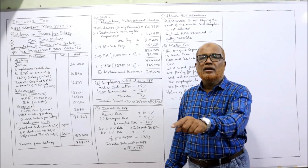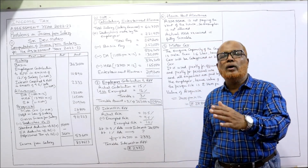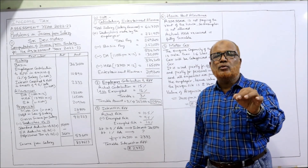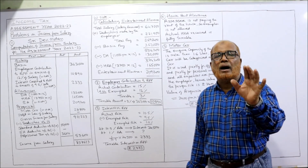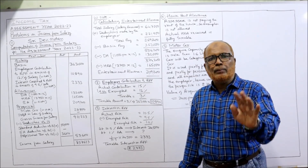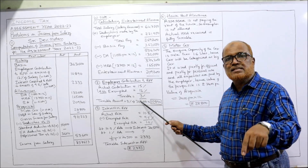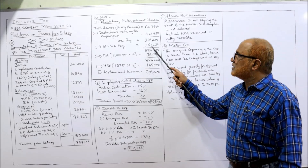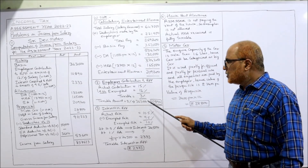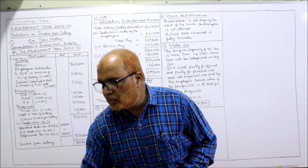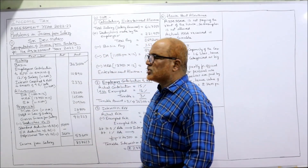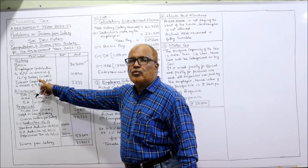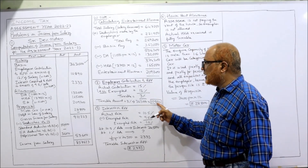Regarding employer's contribution to RPF: the problem states the employer contributes 15%, but the Income Tax Act exempts employer's RPF contribution only up to 12% of salary. The excess 3% is taxable. So the taxable amount is 3% of basic pay of three lakh sixty-three thousand, which equals ten thousand eight hundred ninety. In the computation, employer's contribution to RPF in excess of 12% of salary is ten thousand eight hundred ninety.